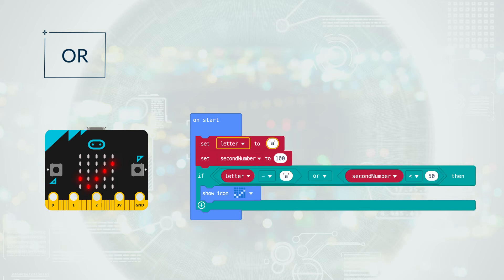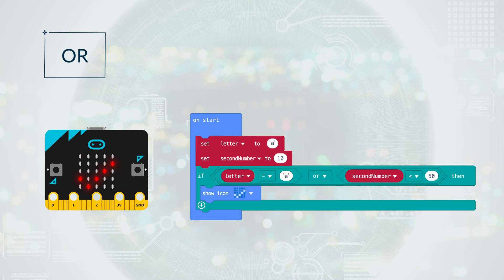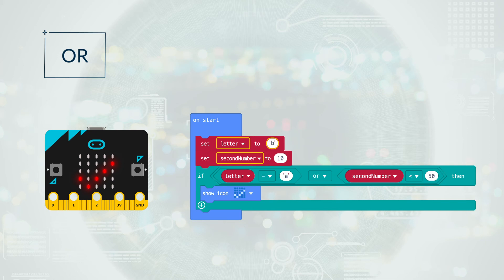If letter was A and second number was 100, then it will return true, because one side is true. If letter was B and second number was 10, then it will return true, because one side is true. If letter was B and second number was greater than 50, for example 80, then it will return false, as neither side is true.